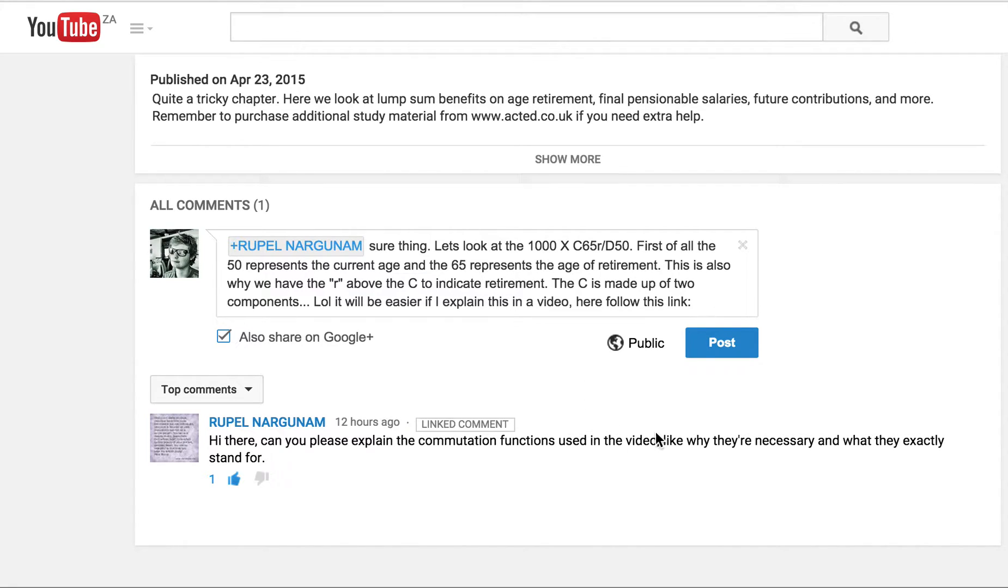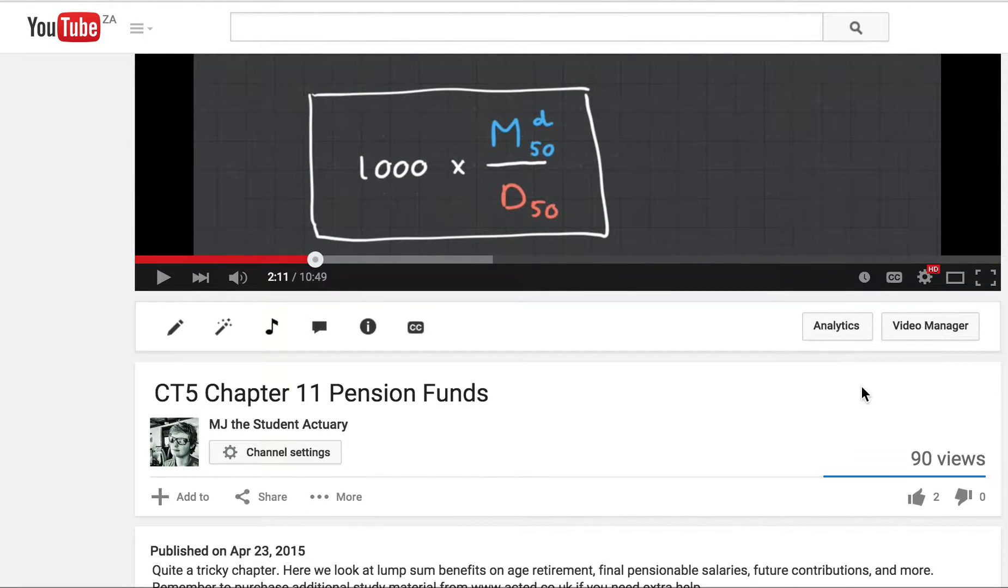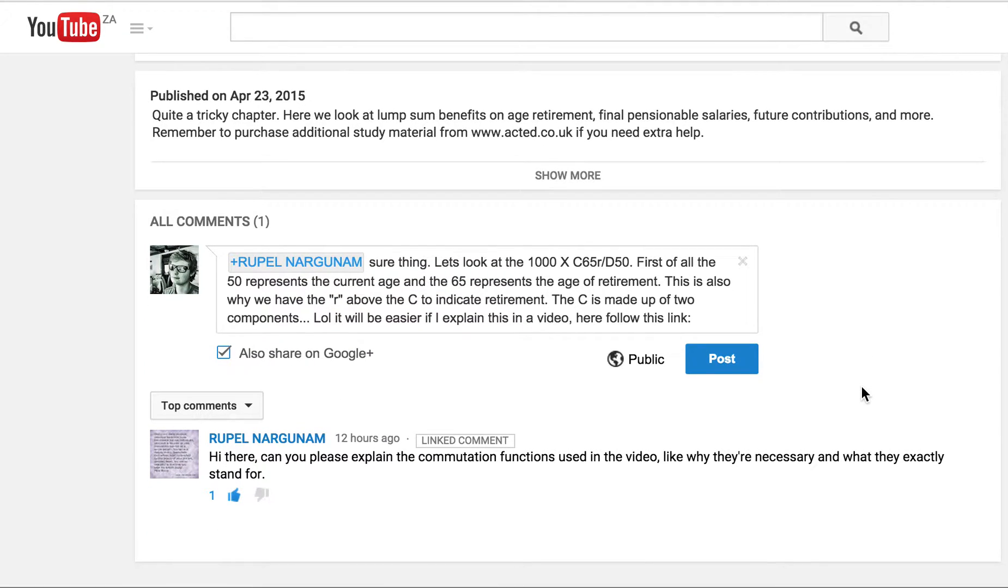Hey guys, it's MJ the student actuary and I got a comment on one of the pension videos I did for subject CT5 by Rupal. I hope I'm saying your name correctly. He's just asked me to explain the commutation functions a little bit better. In my video, I go through it very quickly to try to get the entire chapter done. You can see I started explaining it to him and I thought it's going to be actually much easier if I explain this in a video. If you guys are also having a little bit of issues with commutation functions, you can also get some benefit from this.